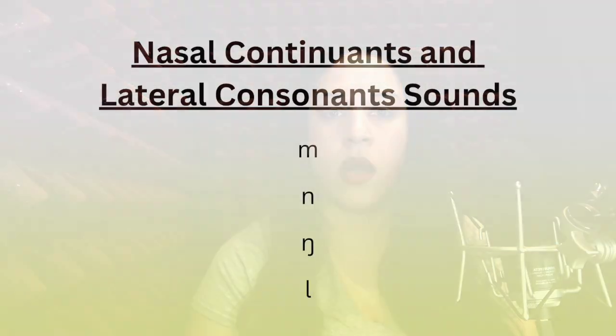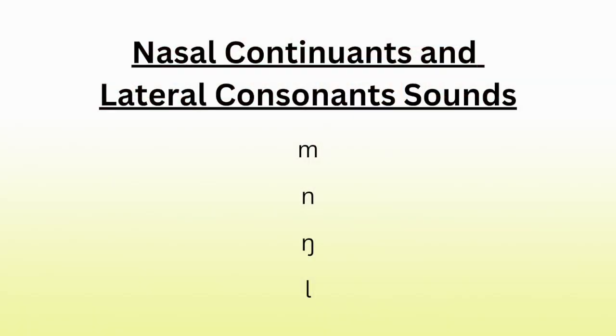So today we are going to work on consonants that are known as nasal continuants and laterals. There are three nasal continuant sounds and one lateral sound, and they are m, n, ng, and l. So let's start with the nasal continuants.